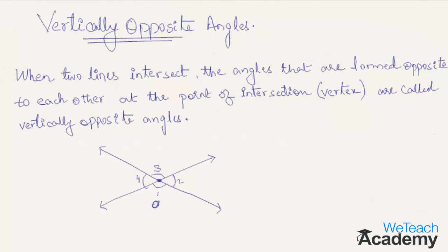Now if you observe, angle 1 is opposite to angle 3, hence this is one pair of vertically opposite angles. And angle 2 and angle 4 is the other pair of vertically opposite angles.